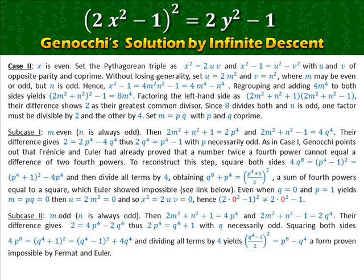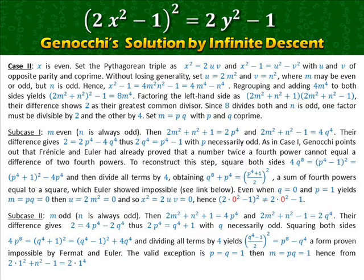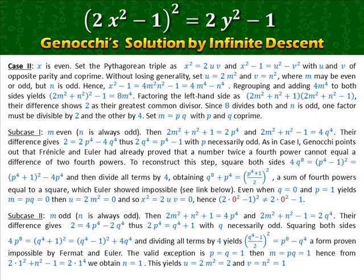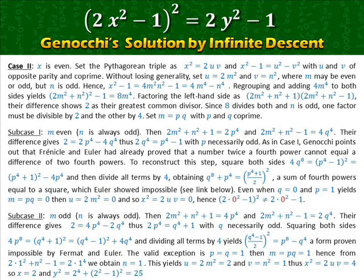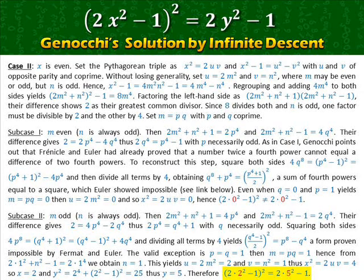The valid exception is when p = q = 1, then m = 1. From the second factor we obtain n = 1. This yields u = 2 and v = 1, thus x² = 4, so x = 2, and y² = 25, thus y = 5. Therefore the non-trivial solution is x = 2 and y = 5.